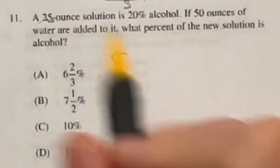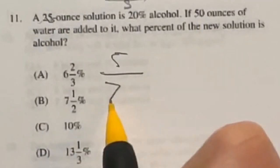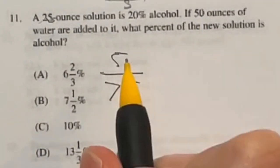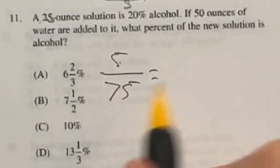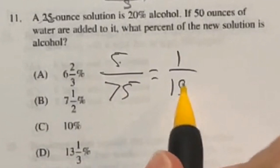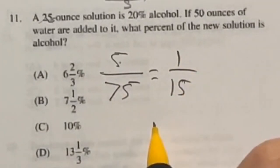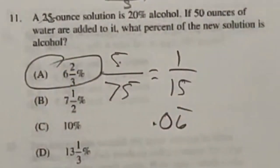Well, now we added 50 to that 25. So we have a total of 75 ounces now, and 5 of those ounces are alcohol. So what is 5 out of 75? Well, that reduces to 1 over 15, and that as a decimal is 0.06 repeated, also known as 6 and 2 thirds. Answer A.